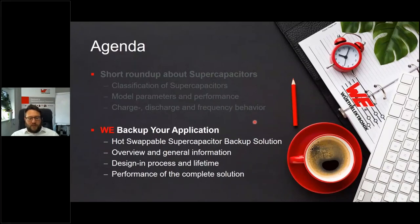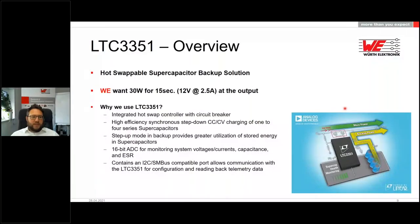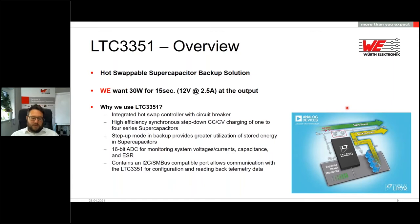Now we go into detail about the application itself. We used an Analog Devices IC for voltage regulation in our demonstration. The IC has very nice features like the hot-swap function and high power capability. We want 30 watts for at least 15 seconds, so we designed for 12 volts and 2.5 amps at the output. Further advantages include a high-efficiency step-down converter, special supercapacitor charging, a step-up converter for backup mode, and interfaces for data transmission and telemetry.